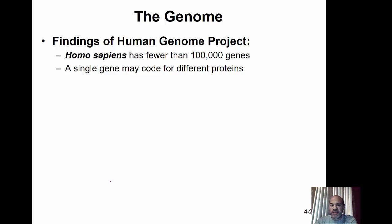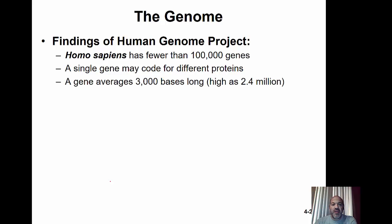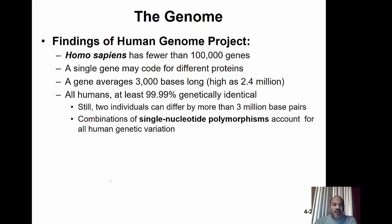The genome project findings: for humans, there are fewer than 100,000 genes — that was the old estimate. A single gene must code for different proteins. The average gene is about 13 base pairs long but can be as high as 2.4 million. All humans are at least 99% genetically identical, yet there's great variation among humans and even among siblings. Any two individuals can differ by more than 3 million base pairs.